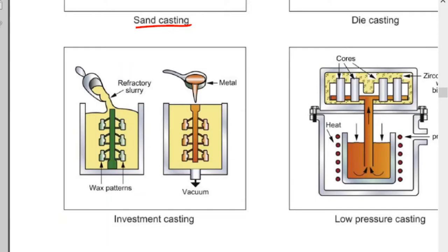Investment casting consists of a series of wax patterns attached to a central post, creating a tree structure. A refractory slurry — including fine silica and binders — is poured onto this structure and allowed to solidify. The entire setup is then heated: the wax melts and drains out, leaving a refractory shell with a cavity. Liquid metal is poured into this cavity, and after curing, the silica mold is broken out and the cast material is removed.